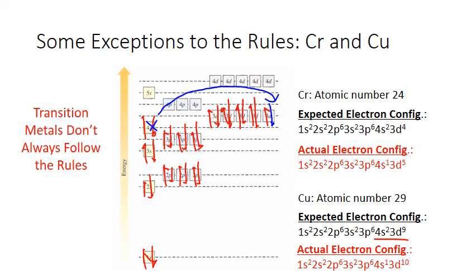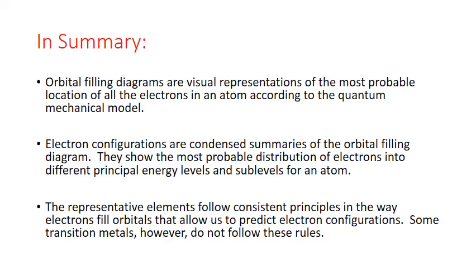Some transition metals have electrons jump between subshells without producing a half-filled subshell, and unfortunately a fully satisfying explanation for these exceptions hasn't been found. Transition metals do not always follow the rules. In summary, orbital filling diagrams are visual representations of the most probable location of all electrons in an atom according to the quantum mechanical model, and electron configurations are condensed summaries of the orbital filling diagrams showing the most probable distribution of electrons into different principal energy levels and sublevels.